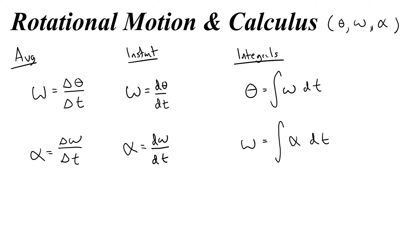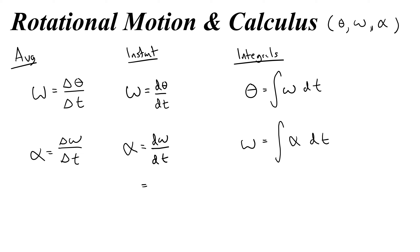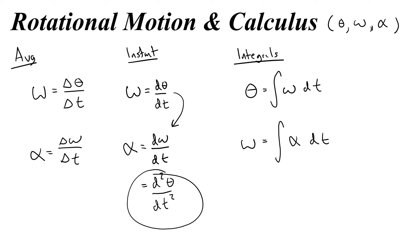Sometimes we want to express the derivative for acceleration as a second derivative, because angular velocity is the derivative of position. So we can write angular acceleration as the second derivative of angular position with respect to time. That's how you would write the angular acceleration as a second derivative of position.